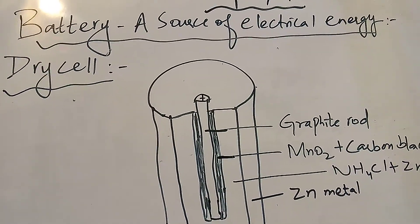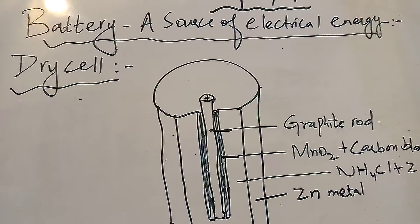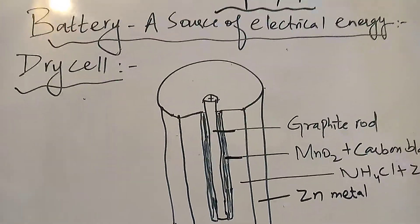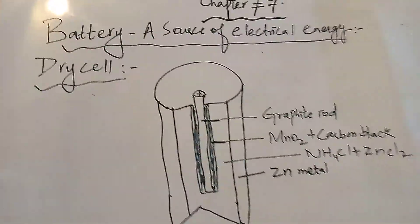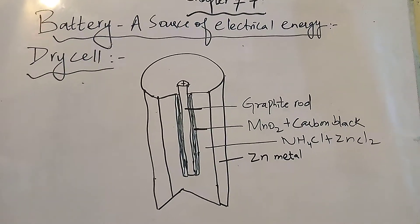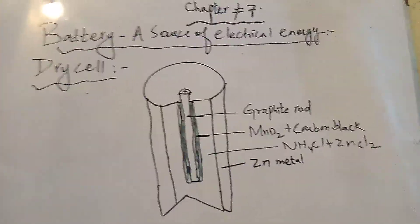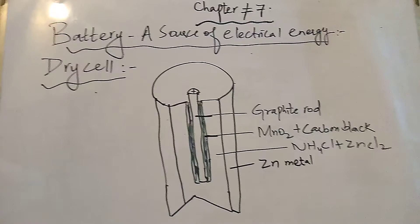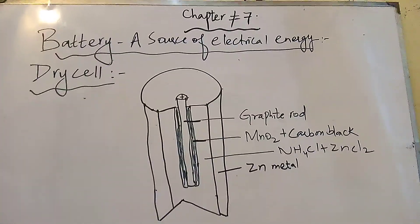For example of batteries, these are dry cells, storage cells and mercury batteries. Today we will study the construction of dry cells. Dry cells are basically used in different flashlights, toys and different small appliances.